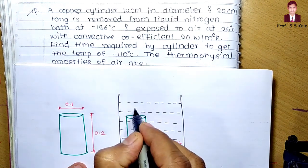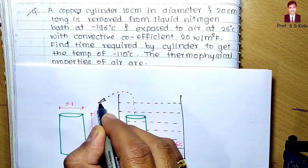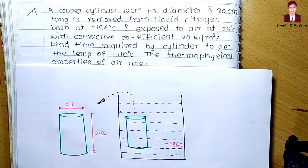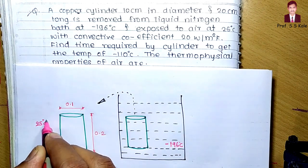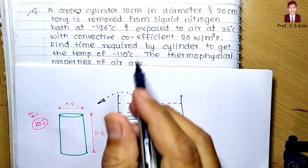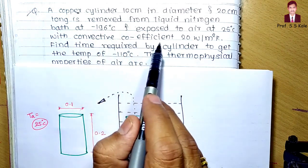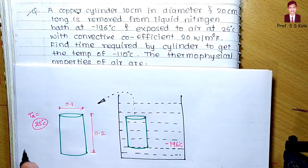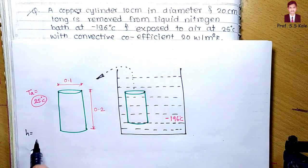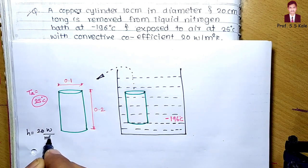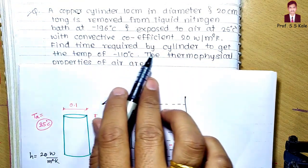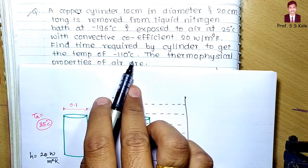The cylinder is removed and exposed to air at 25°C, so Ta = 25°C. The convective heat transfer coefficient is given as h = 20 W/m²·K. The question asks: find the time required by the cylinder to reach a temperature of minus 110°C.